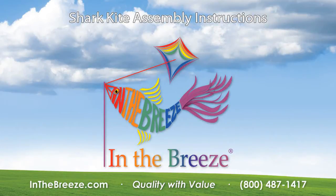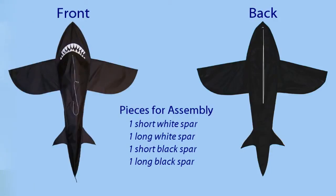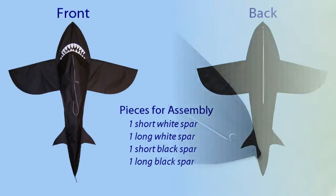This is an assembly demonstration for an In the Breeze 3D shark kite. Both four and six foot styles come out of the bag with four spars tucked into the pockets on the back of the kite.